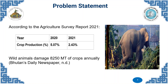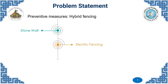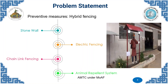Governments and other organizations have come up with many preventive measures such as hybrid fencing, including stone walls, electric fencing, and chain-link fencing, which have proven to be ineffective. Recently, AMTC under MoAAF has come up with an innovative solution.